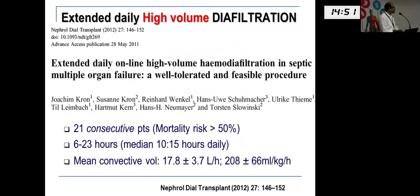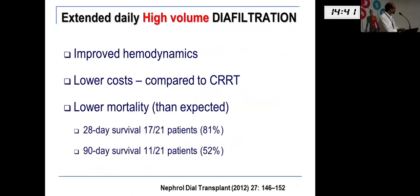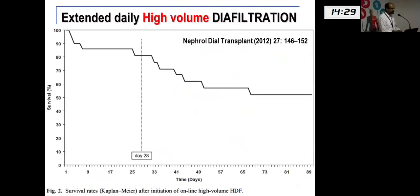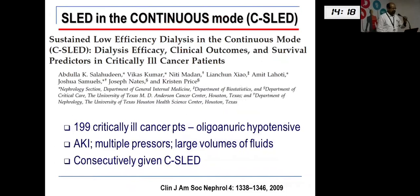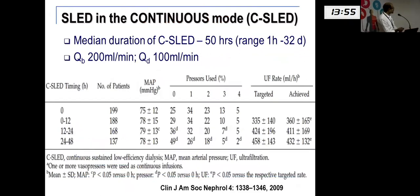The mortality was actually lower than predicted in their population, though we don't have comparative data with CRRT yet. Blood pressures were maintained and epinephrine use was lower at the end of therapy. There is also this new concept of C-SLED, or continuous SLED. One paper published this in 199 critically ill malignancy patients who were oligo-anuric and requiring multiple inotropes. SLED was used for as many as 32 days continuously and found to be useful — giving the advantage of CRRT without the cost.